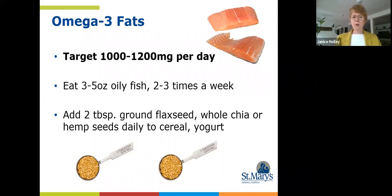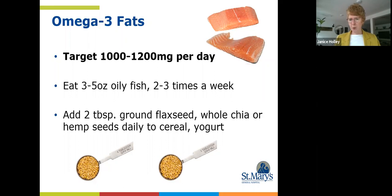Your target is about 1,000 to 1,200 milligrams of omega-3s per day. Rather than get overwhelmed with micromanaging milligrams, we advise you to try and have two servings of oily fish per week — a serving being about three to five ounces, roughly the size of a deck of cards for three ounces of cooked fish. Adding two tablespoons of ground flax seed or whole chia or hemp seeds daily to your cereal or yogurt will help you hit that 1,000 to 1,200 milligrams of omega-3s on average.